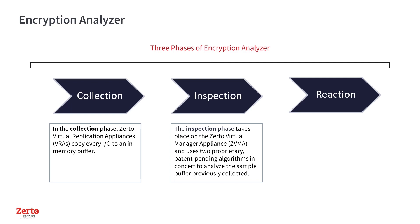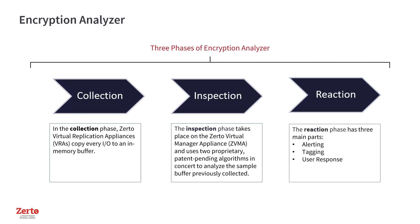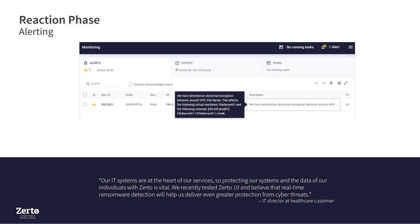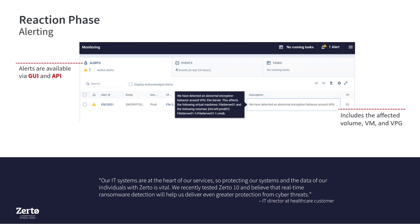The third phase, or Reaction, will be the most important for your team. It has three main parts – alerting, tagging, and user response. In the alerting step, Zerto generates an alert if the RED-E algorithm detects anomalous encryption, and/or if RED-E and RED-C both detect it. You'll be able to see the alert via the GUI and API. It includes helpful information on the exact volume, VM, and Virtual Protection Group, or VPG, that are affected.